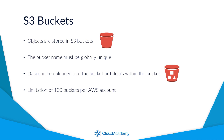Objects stored in these buckets have a unique object key that defines the object across the flat address space of S3. Although folders can provide additional management from a data organisation point of view, Amazon S3 is not a file system, and so specific features of Amazon S3 work at the bucket level rather than specific folder levels.